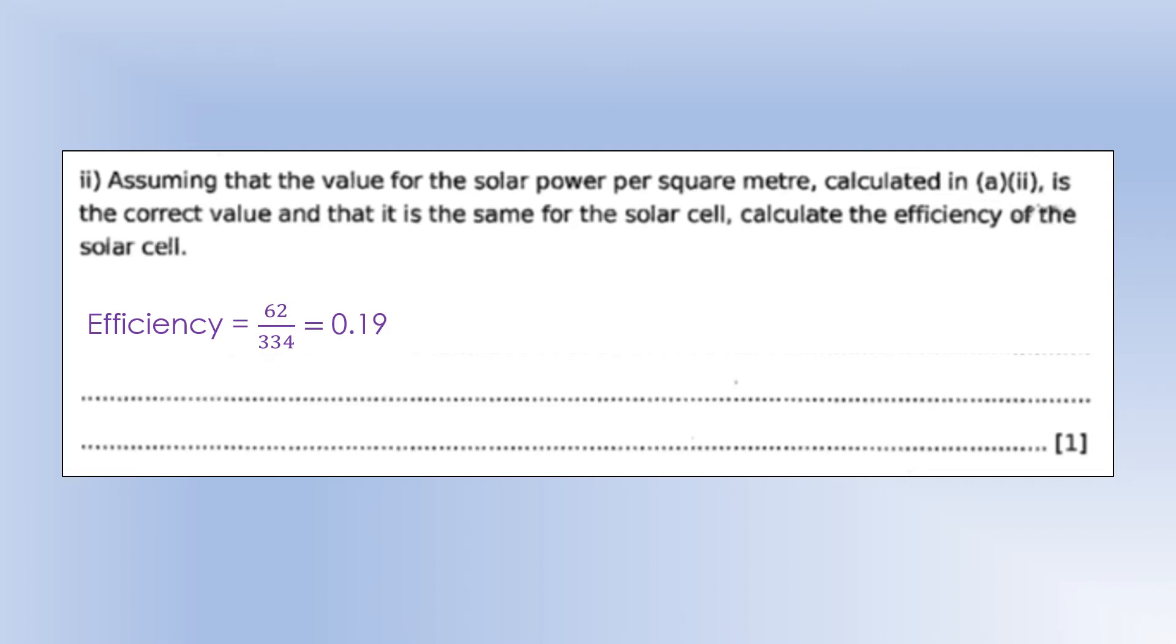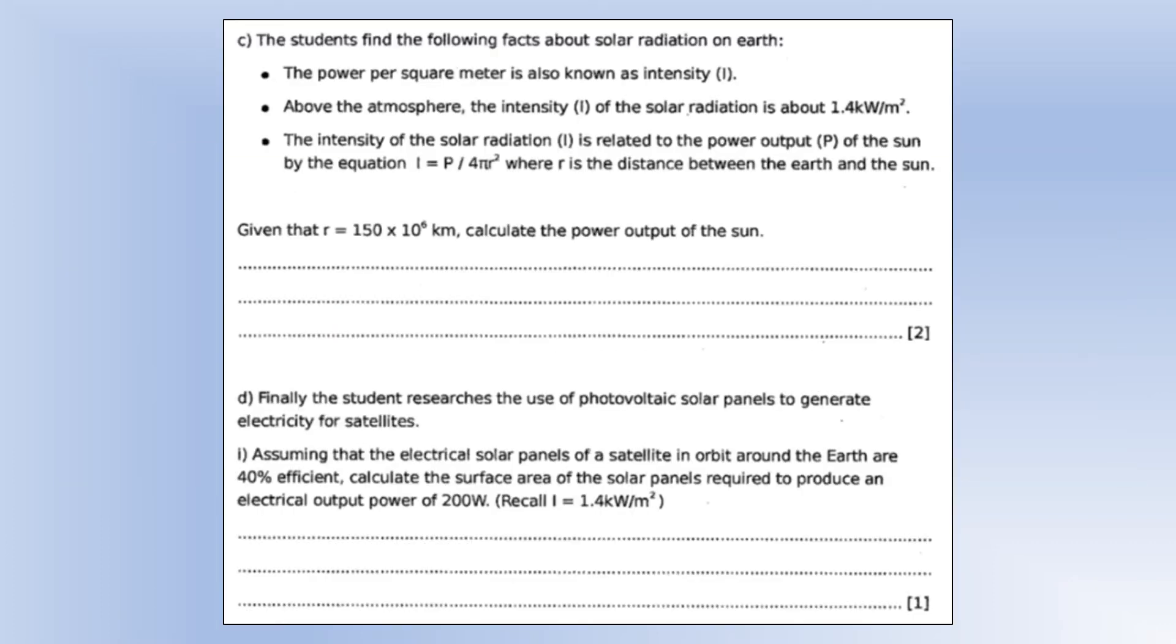Students find the following facts about solar radiation on Earth. The power per meter squared is also known as intensity. Above the atmosphere, the intensity is 1.4 kilowatts, or 1,400 watts per meter squared. The intensity of solar radiation is related to power output of the Sun by the equation, intensity equals power divided by 4 pi r squared, which is the surface area of a sphere. Where r is the distance between the Earth and the Sun. Given that the distance is 150 times 10 to the 6 kilometers, calculate the power output. We already know the intensity, 1,400 times 4 pi, times the distance in meters squared, gives us 4 times 10 to the 26 watts.